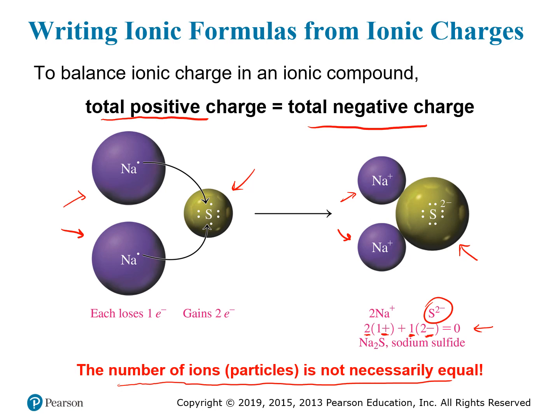To reflect this in the chemical formula, we put a two next to sodium to indicate there are two sodiums for every sulfur. When this actually happens, you generally have a huge number of sodium and sulfur ions combining together and forming an extended network. It's not really possible to talk about an individual molecule of an ionic compound the way it is for a covalent compound. So the numbers in the formula really just represent the smallest whole number ratio between the positive and the negative ions.